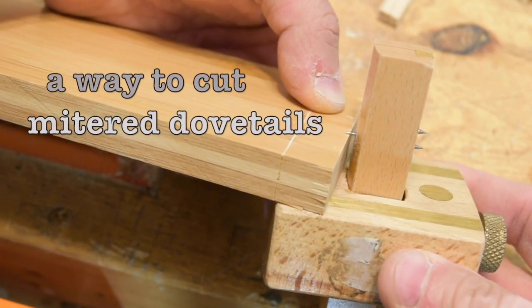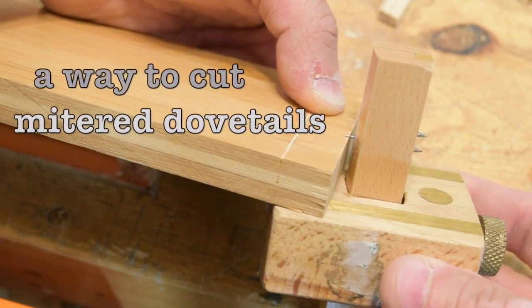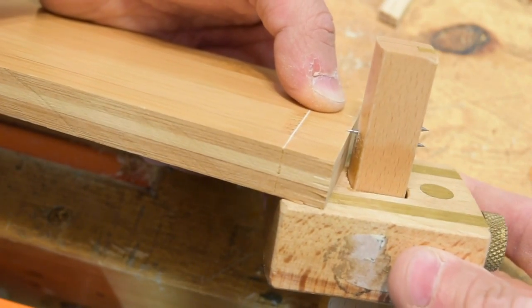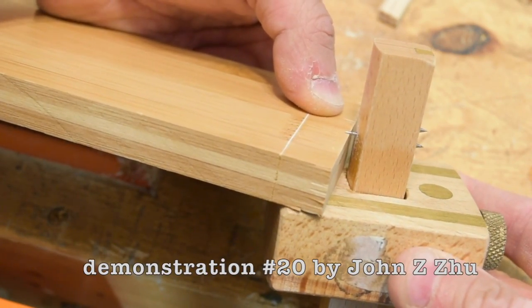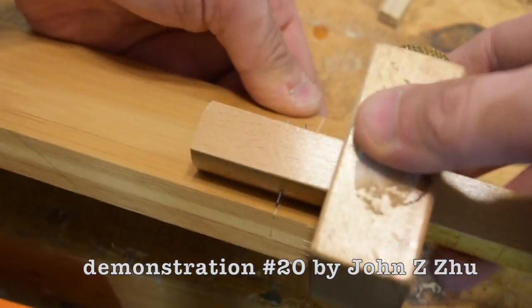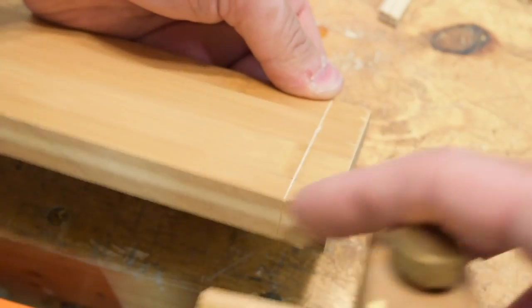I've set my marking gauge about 1/32nd to 1/64th thicker than the actual material, about half a millimeter or so, and I've run that gauge all the way around the entire piece, all four sides of this piece of wood.